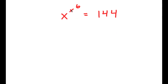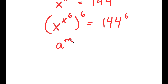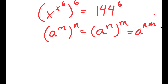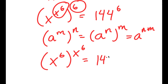In this problem, I have x to the power of x to the power of 6 is equal to 144. To solve this, I'm going to start by taking the power of 6 on both sides. If I have something in the form a to the power of m to the power of n, this is equal to a to the power of n to the power of m, which is a to the power of n times m. So x to the power of x to the power of 6, all to the power of 6 — I can switch these, giving x to the power of 6 to the power of x to the power of 6, equal to 144 to the power of 6.